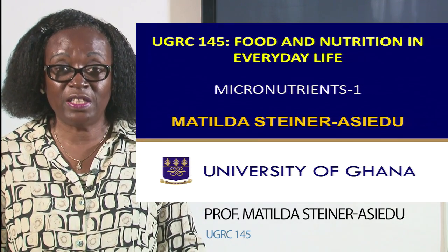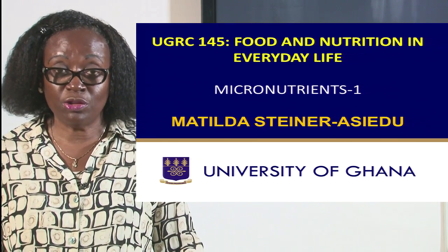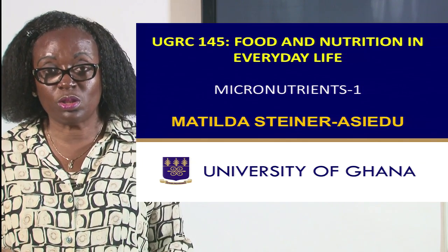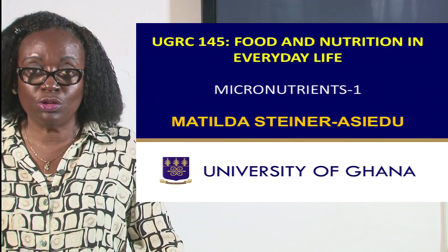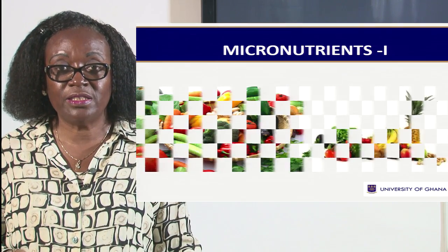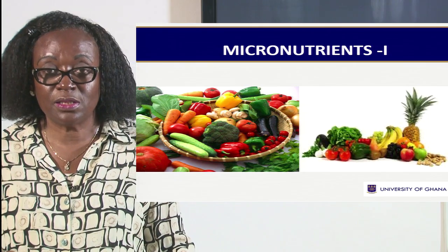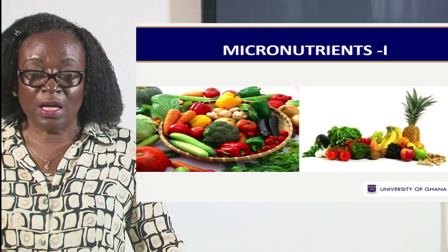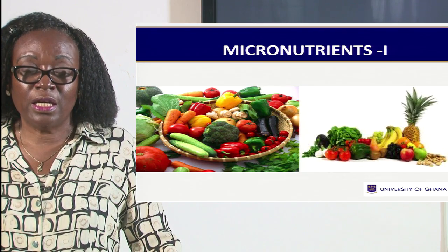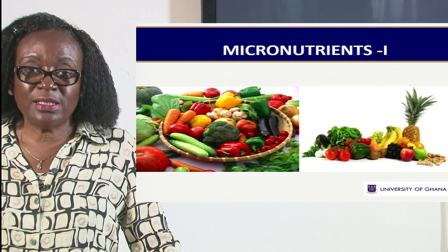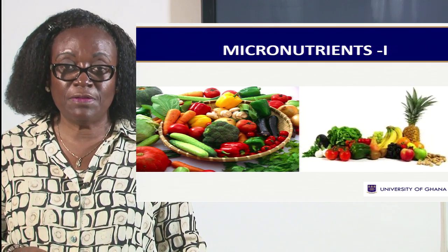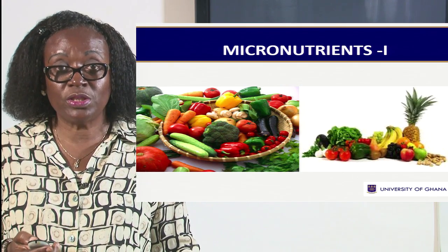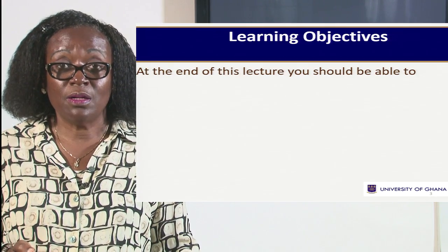The micronutrients are vast, so we shall divide it into two — that's why I have micronutrients one today. Micro, as the name suggests, means small, as opposed to macro which means large. So these are nutrients that are needed in smaller quantities. We get them from all foods — animal products, legumes — but we get them most from our fruits and vegetables. That is why you see the picture there.